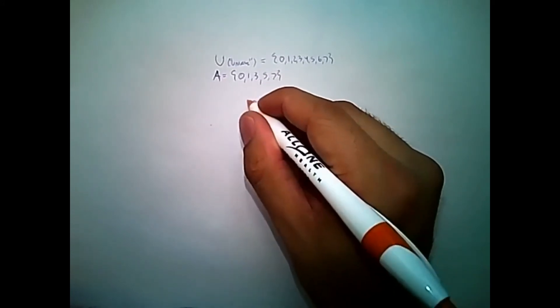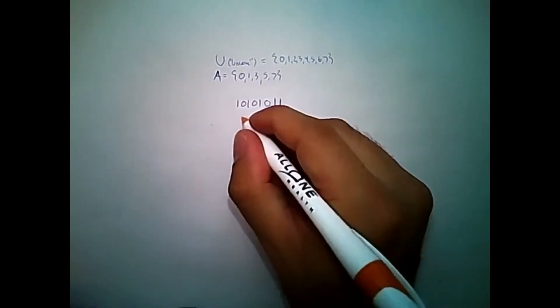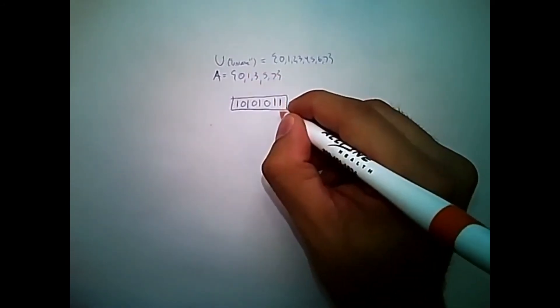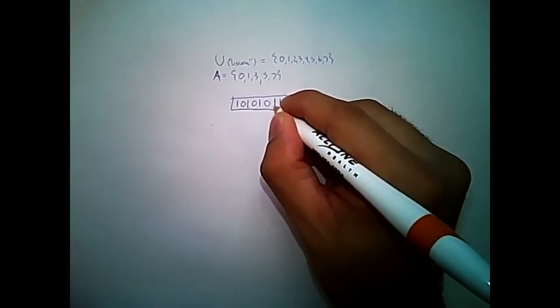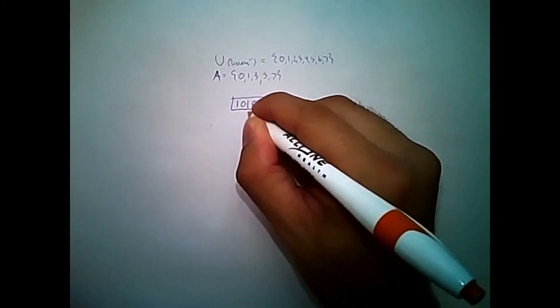4 doesn't show up, 5 shows up, 6 doesn't show up, but 7 shows up. So this is my bit string here. And the positions of each bit here correspond to each of the elements and whether or not they show up.